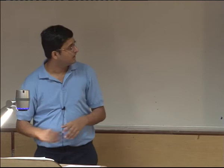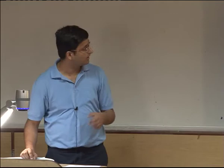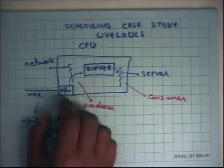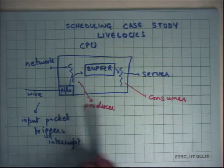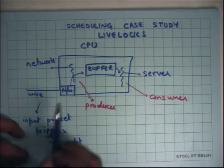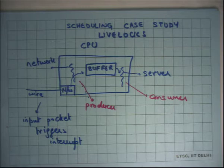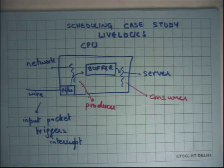Let's take this example. Say this box is a computer or CPU, connected to the network via a network card. Packets are coming in — let's say it's a web server or some kind of network server. It's receiving packets and sending replies, receiving a lot of requests and then sending replies to those requests.